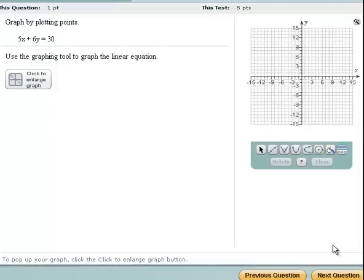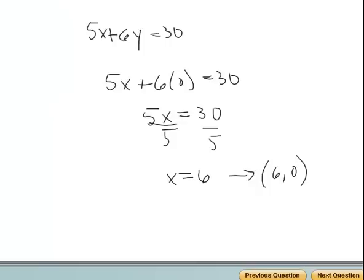If I want to graph this line 5x plus 6y equals 30, first I have to do some work which I'd show you right here. 5x plus 6y equals 30, I just found one point. So I put in 0 for y, I found x to be 6, and then I'm going to graph this point (6, 0).